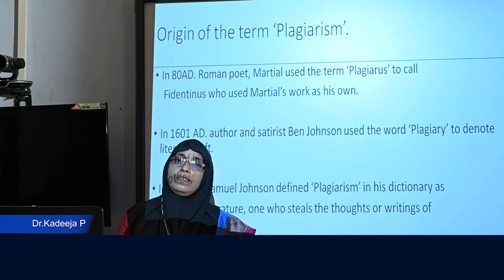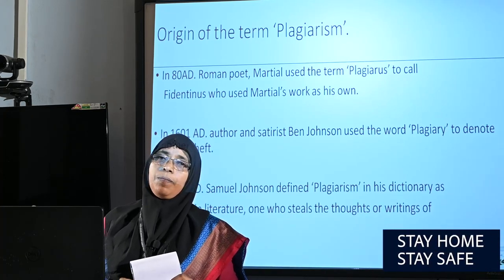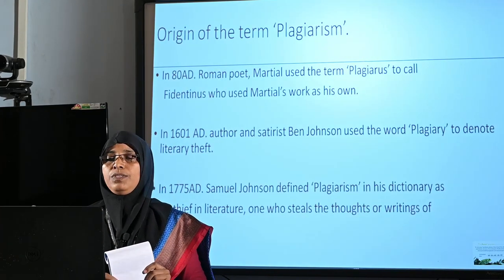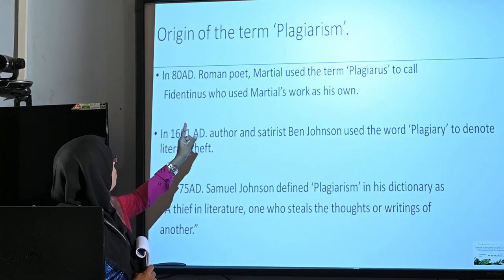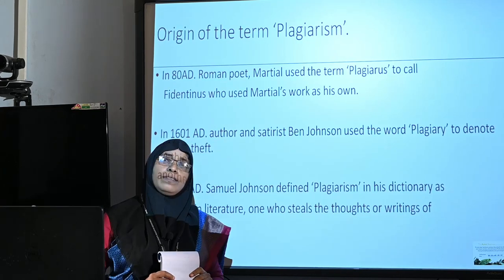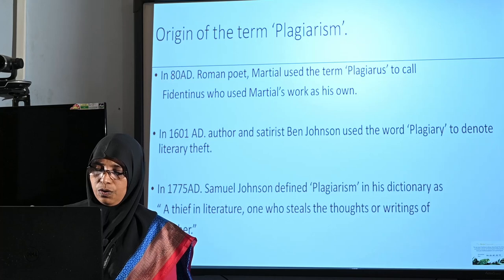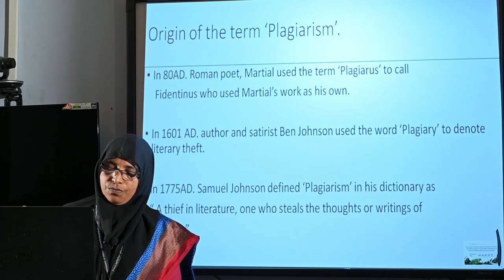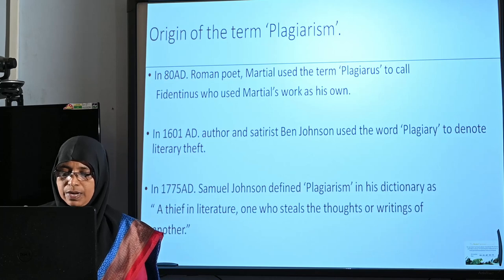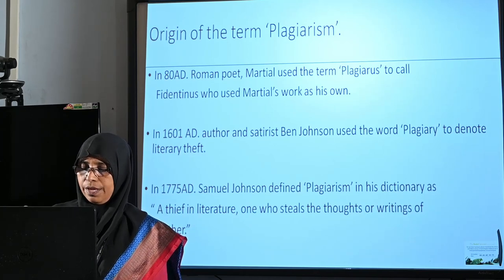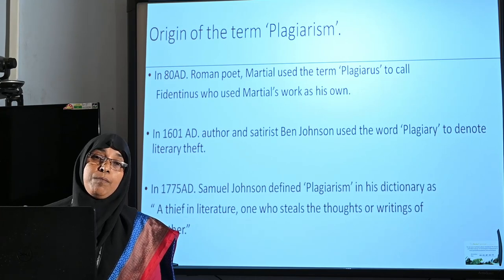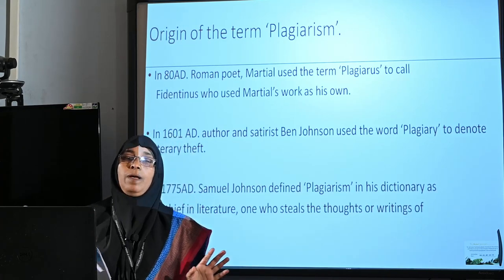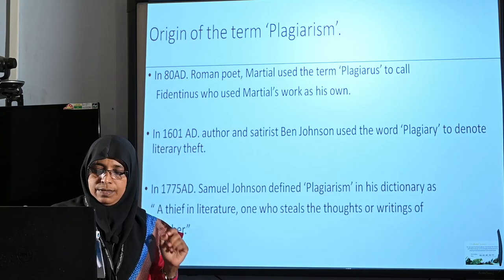According to Jonathan Bailey, in 80 AD, a Roman poet Marshall used the term plagiarism to call Ferdinand, who used Marshall's work as his own. By this time, there was no copyright law, so no legal remedy was available for Marshall. He wrote a series of verses against Ferdinand, using the word plagiarism and calling him a kidnapper. Marshall was not concerned about citation or acknowledgement, but only about the lack of payment.